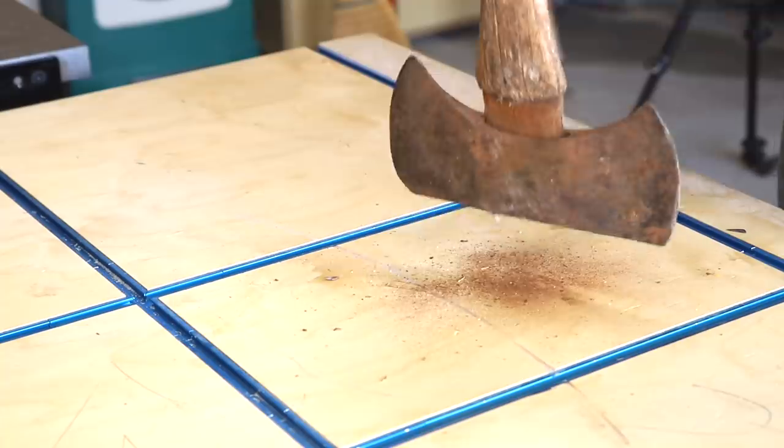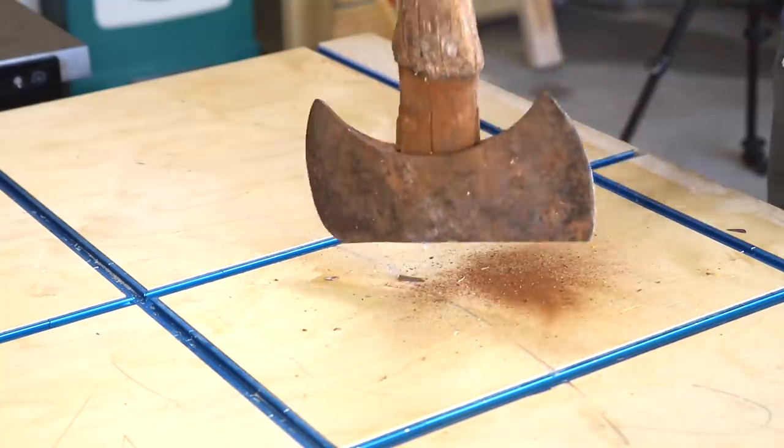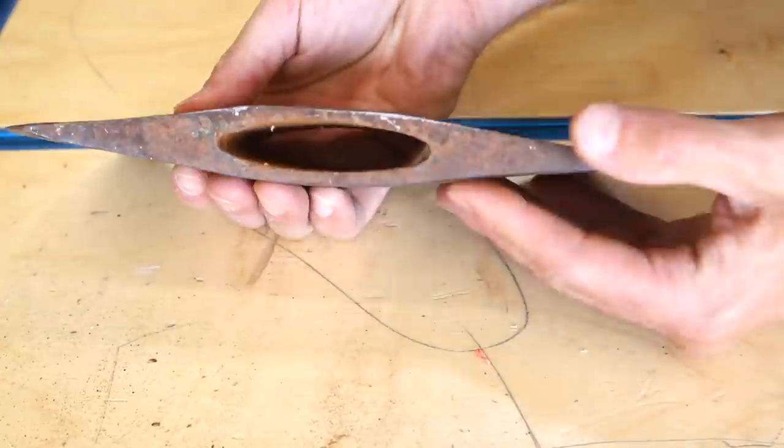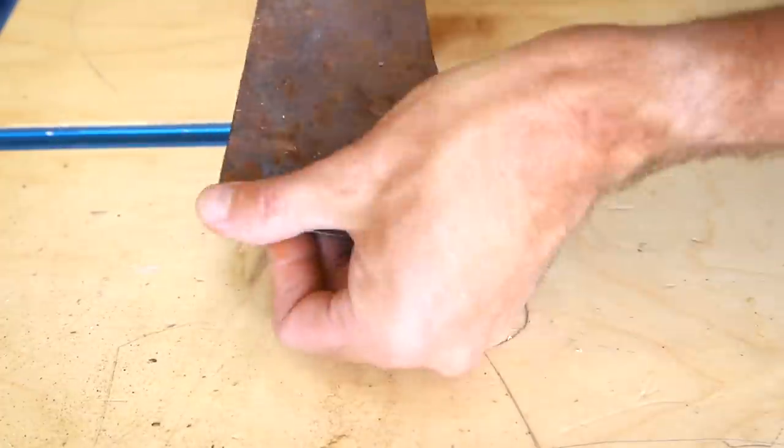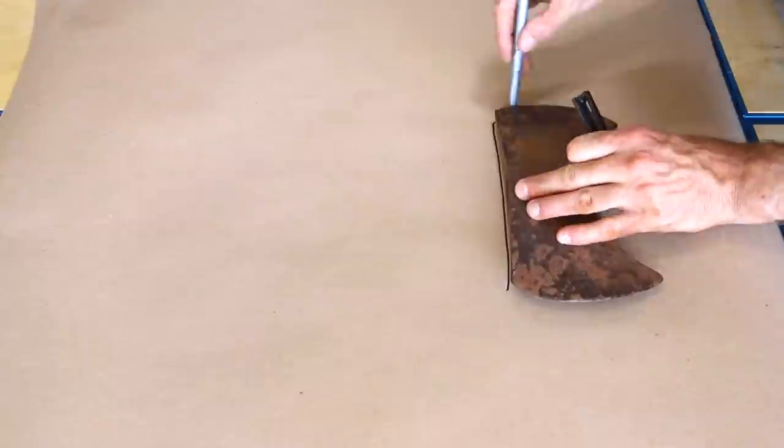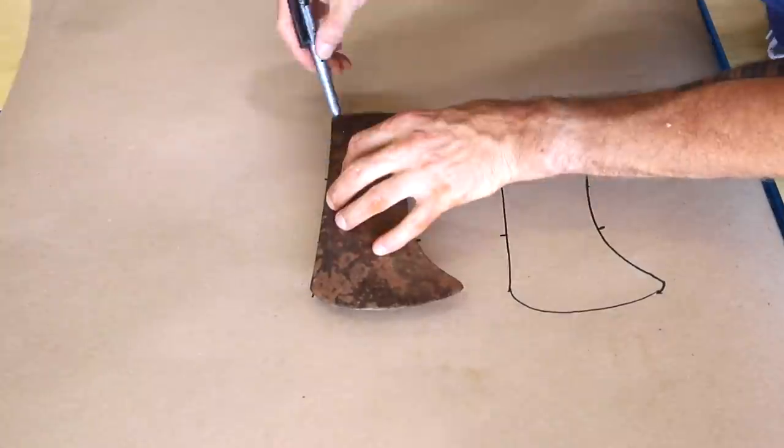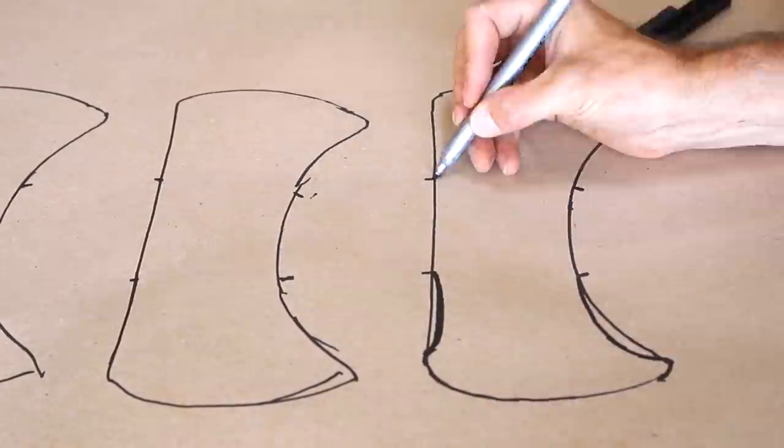First I had to remove the axe head and it was a bit stubborn because of how old and rusted it was. I didn't know what I wanted the axe to look like initially so I sketched out a few shapes to get a better idea of what direction to take it in.